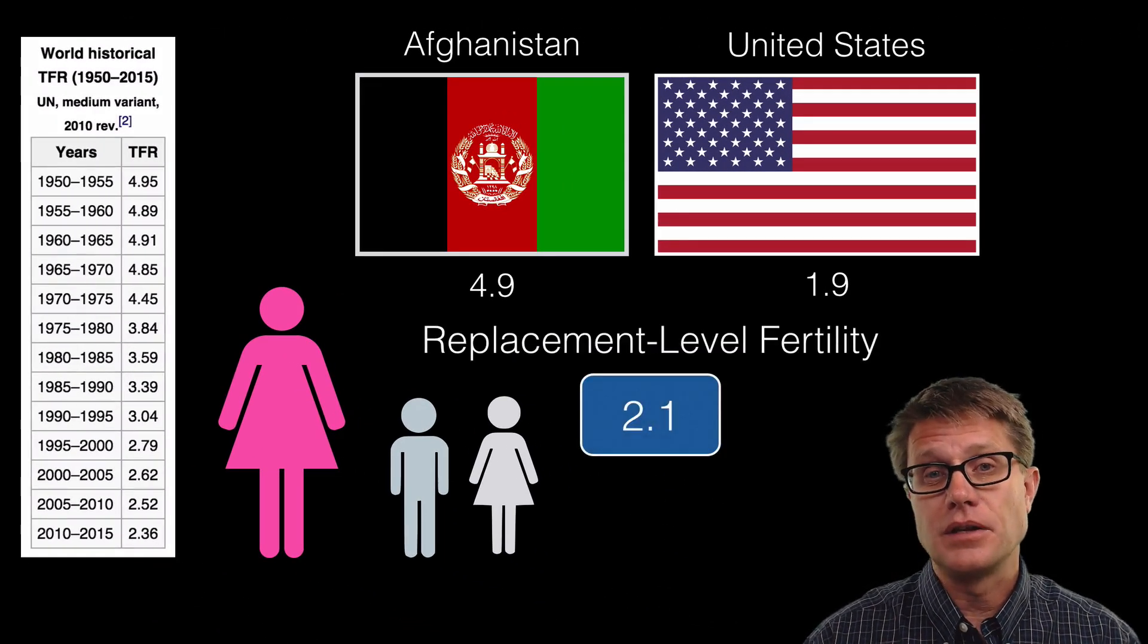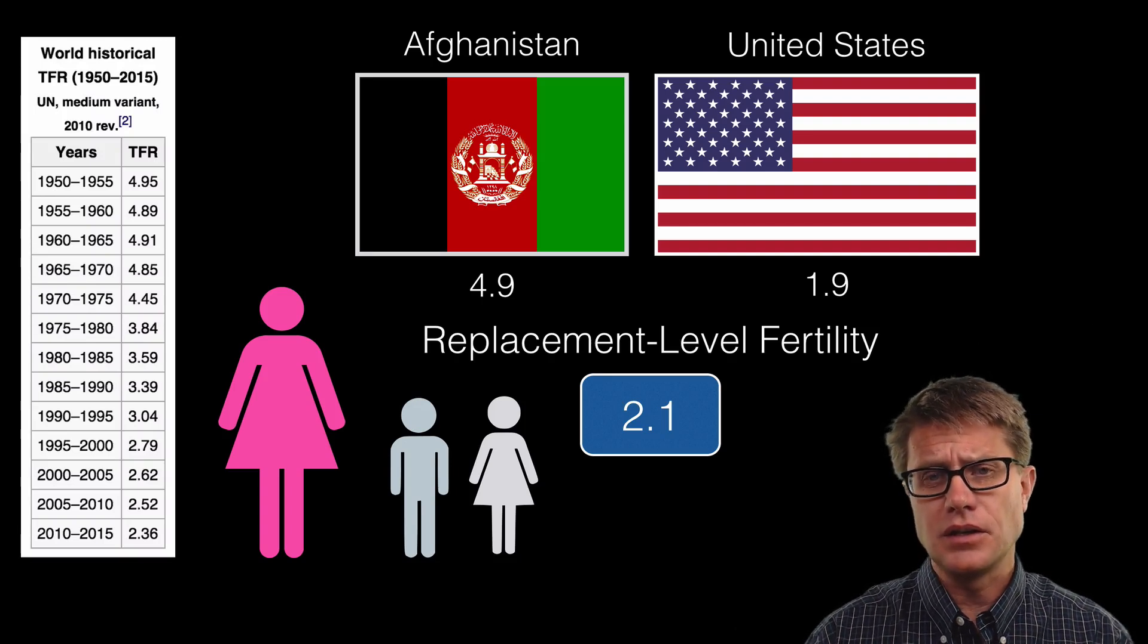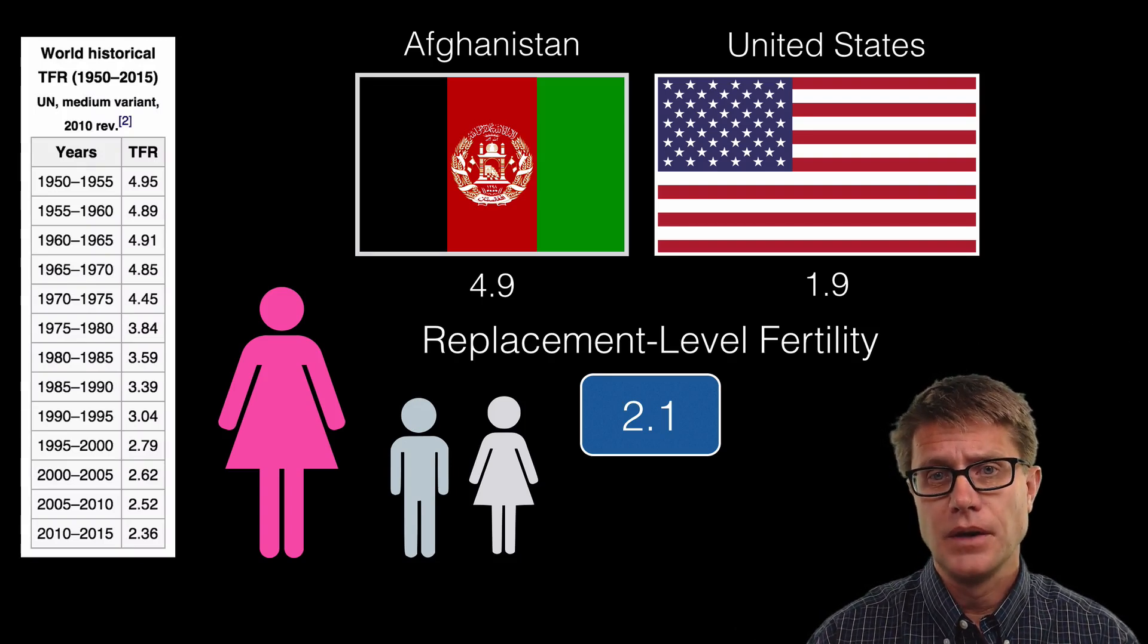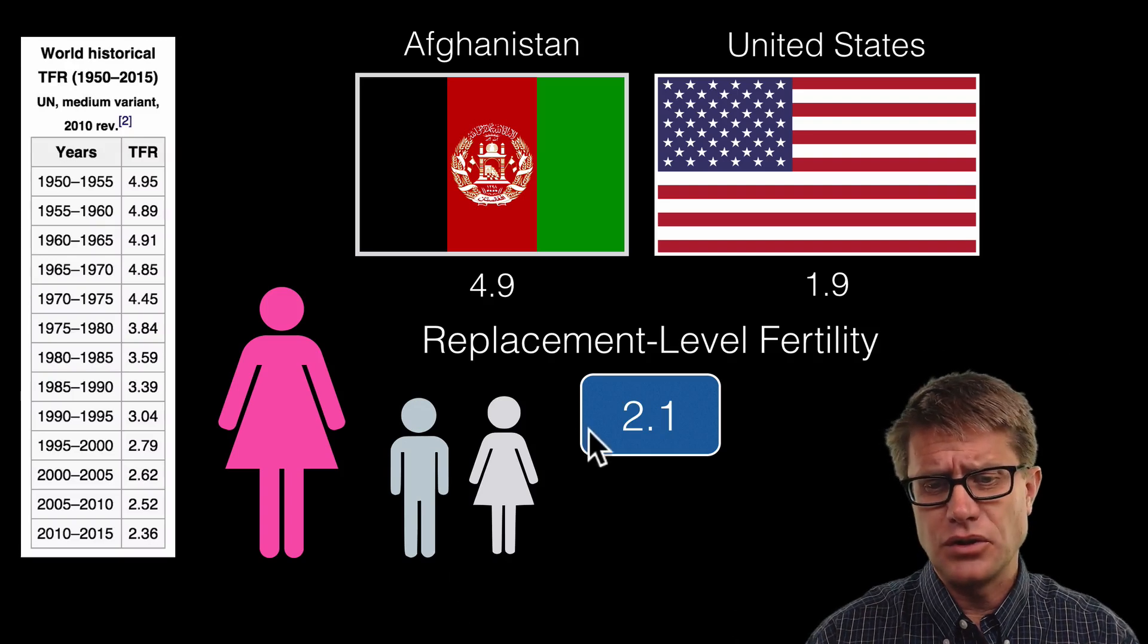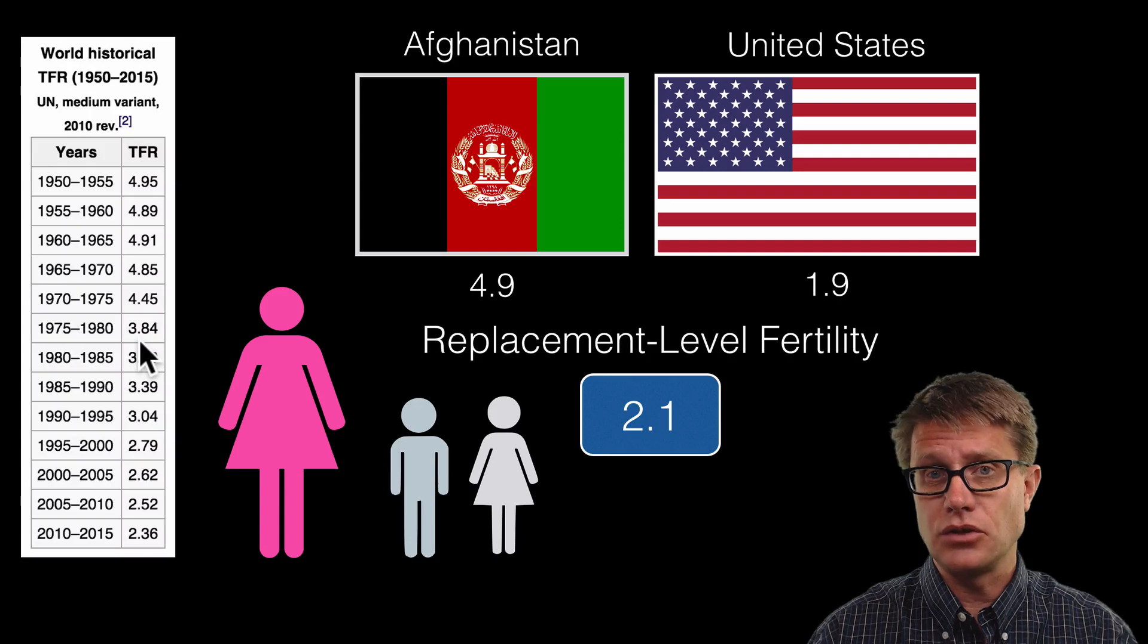Now a value that demographers will use is called the replacement level fertility. What does that value have to be to keep our population stable? And so you might think it is going to be 2 because we have the mom and she has to replace herself and the dad. So you would think it would be 2.